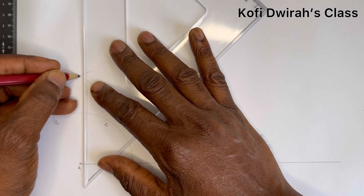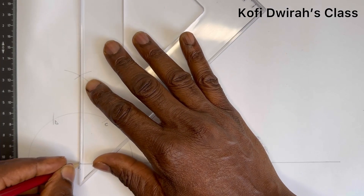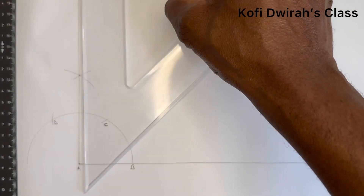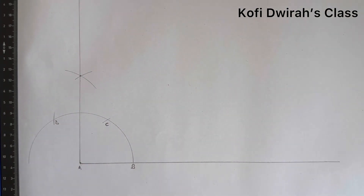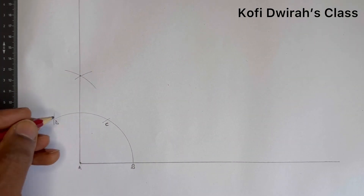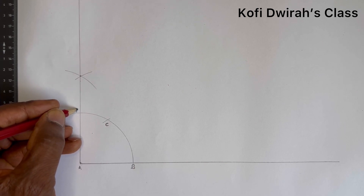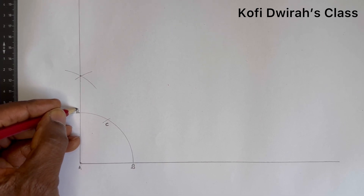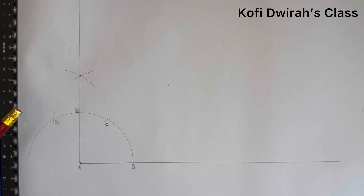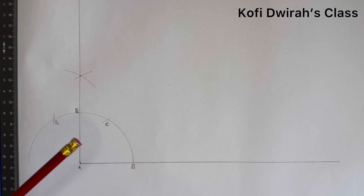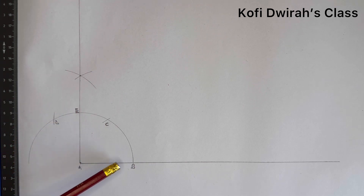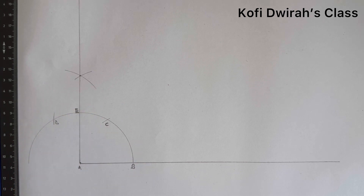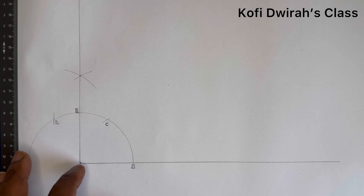This gives us our 90 degrees angle. Let's consider this intersection point to be point E. Now the angle EAB — the angle here — is 90 degrees. So now we are going to trisect this angle.